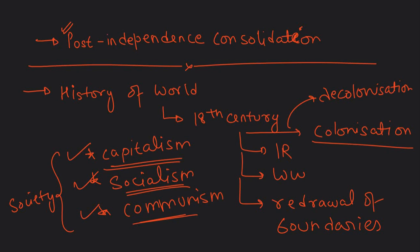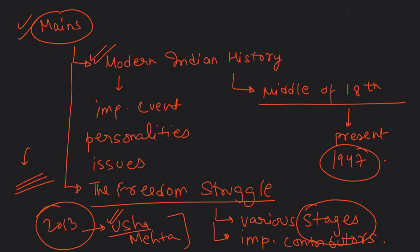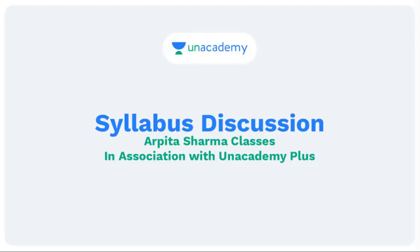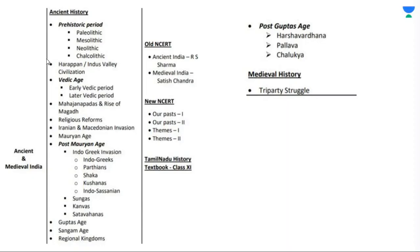So this is the syllabus of mains GS Paper 1. Students who are studying ancient Indian history from a mains perspective don't realize they are preparing for history optional. So if you do not have history optional, do not go deeper into ancient or medieval Indian history. You have to study ancient and medieval only from the perspective of prelims. Now let's look at the syllabus with its sources.